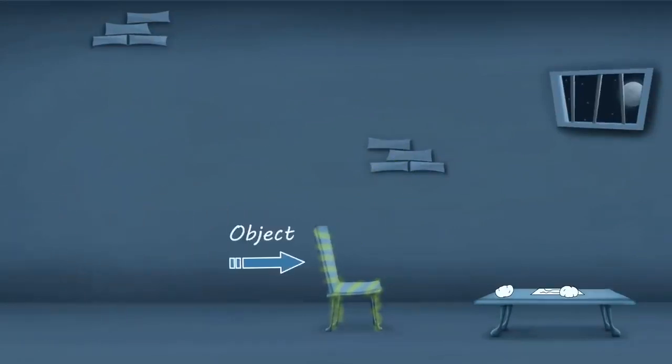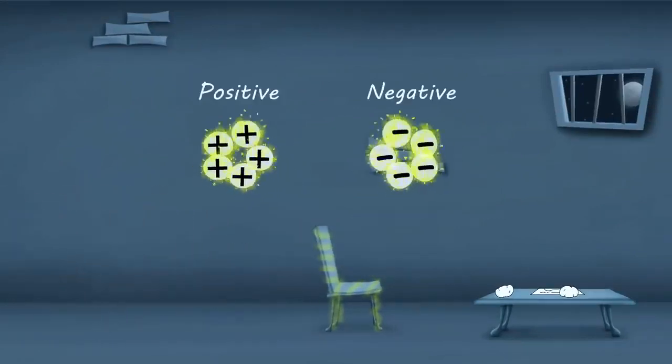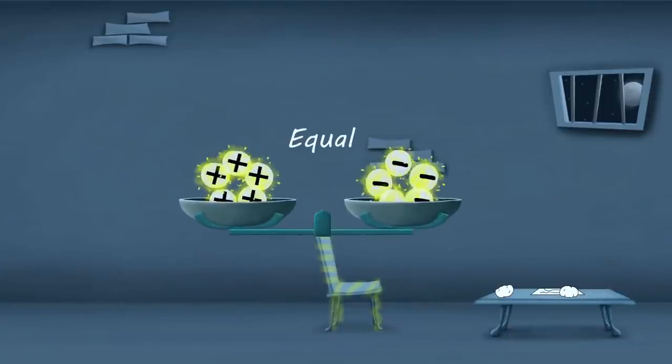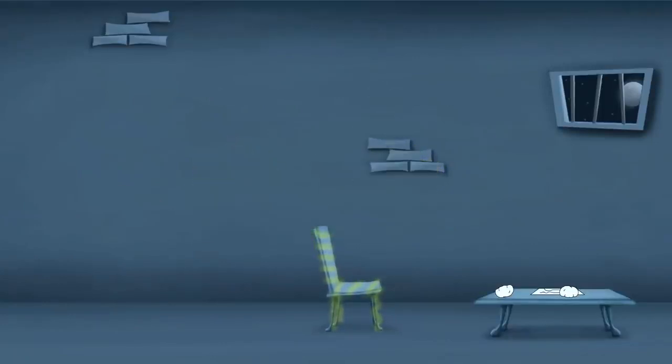However, there are some objects where the positive and negative charges are equal to one another. In such cases, we say that the object is electrically neutral.